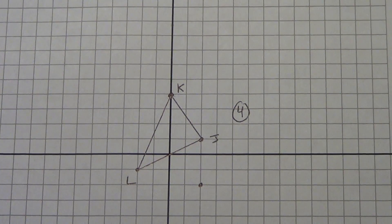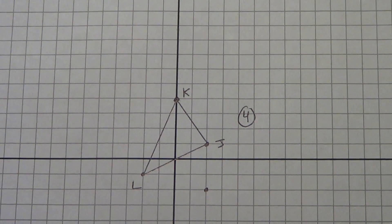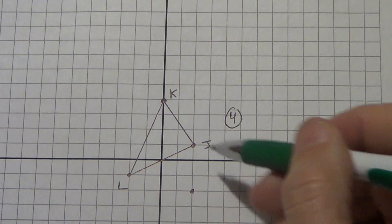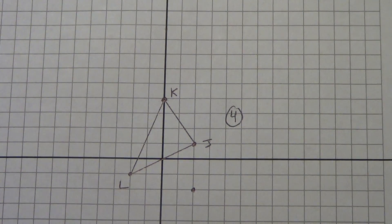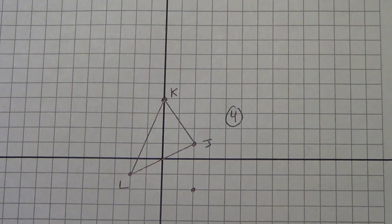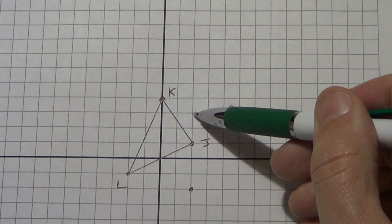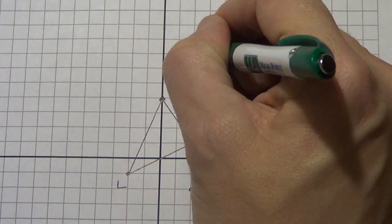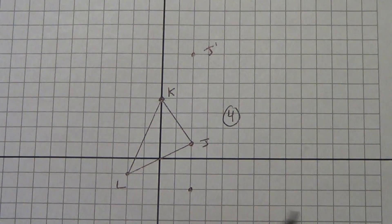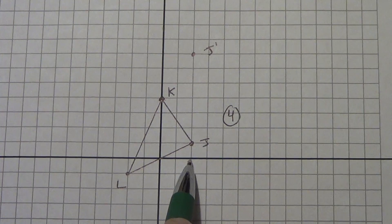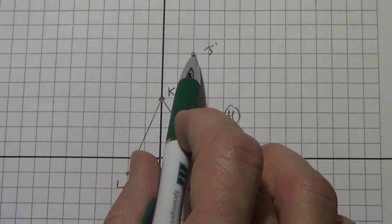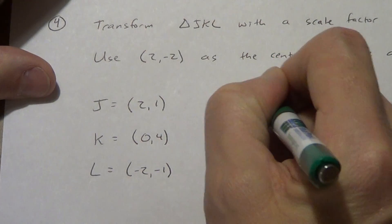From the center of dilation at two, negative two, point J is three units straight up — no left or right movement. With scale factor three, I need to go three times as far: zero left-right and nine units up from the center. Going up nine from the center: two spaces get me back to the axis, then seven more. So J prime is at two, seven.